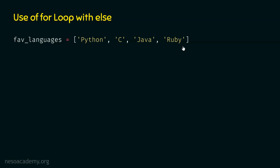This is the list we have. We want to check whether the Java programming language is available in this list or not. If Java is available in the list, we will print 'I like Java'. If Java is not available in the list, we will print 'I don't like Java'.